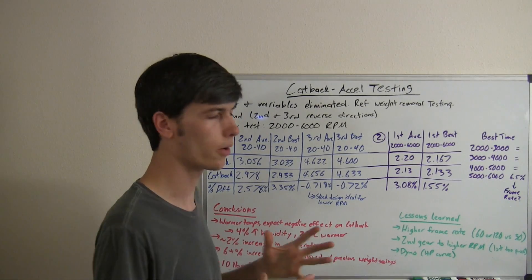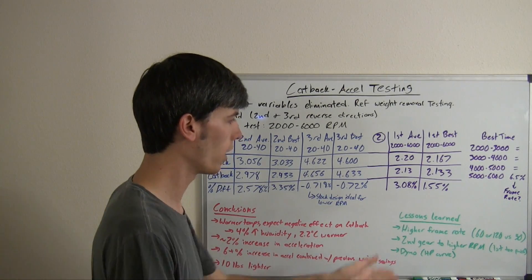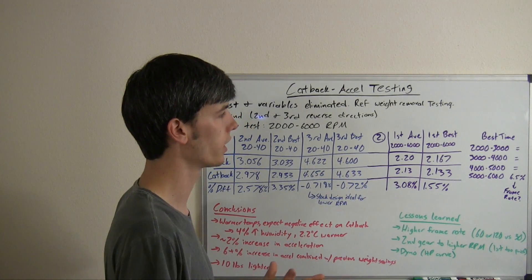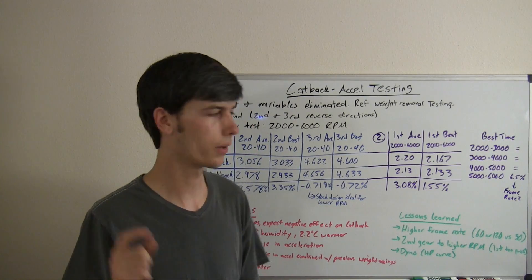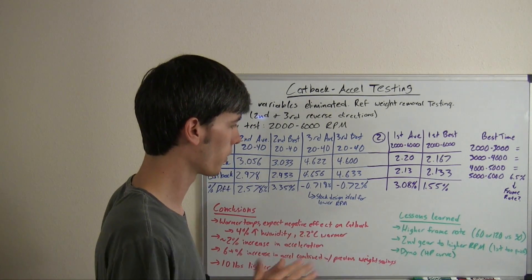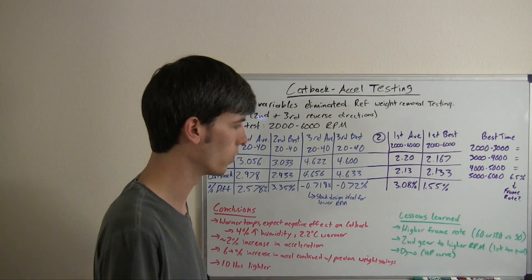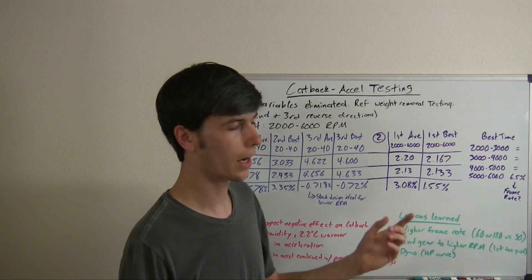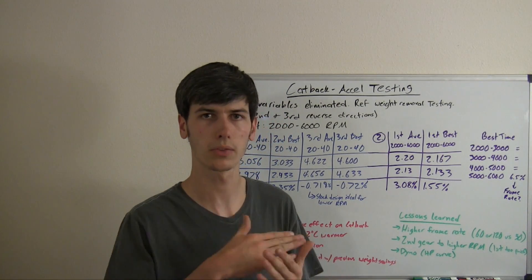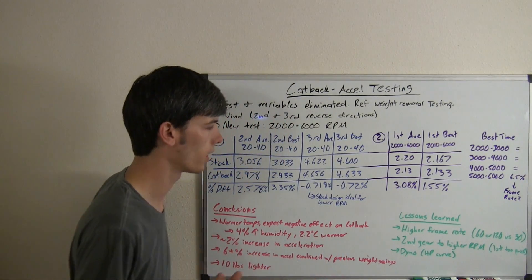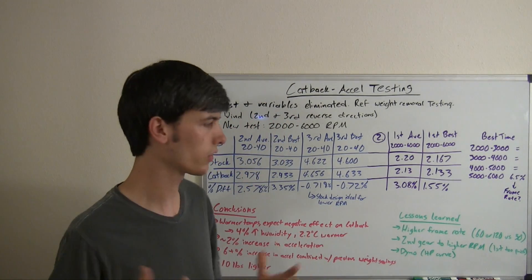I need to use a higher frame rate. For the first gear testing, it was very challenging to break this down with only 30 frames per second. I'd like to use either 60 or 120 frames per second for the next testing that I do. It also would probably be useful to do second gear to the higher RPM rather than first gear because first gear is just so short and so quick. It would be easier to tell the acceleration differences using second gear.